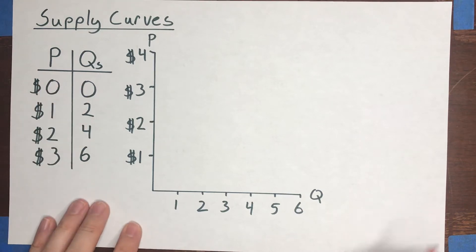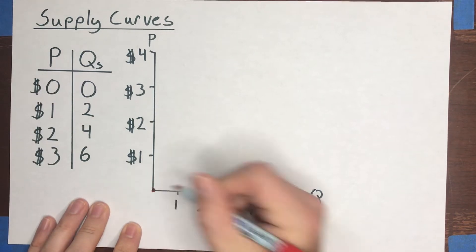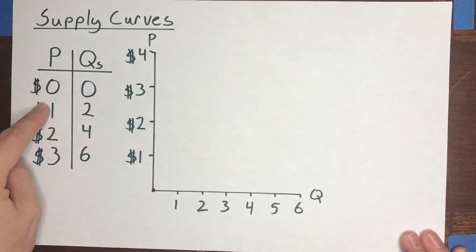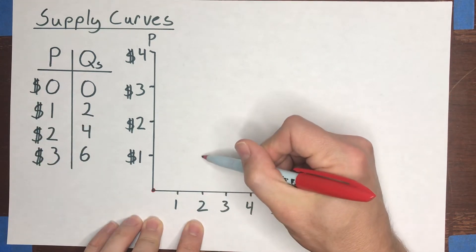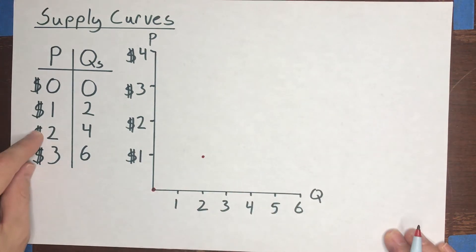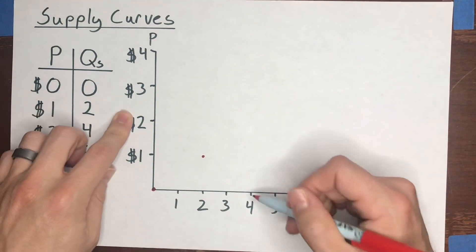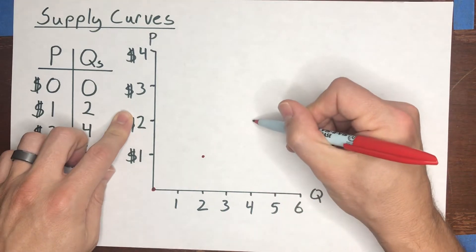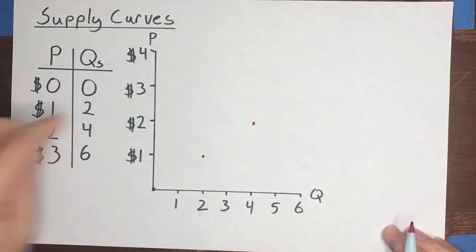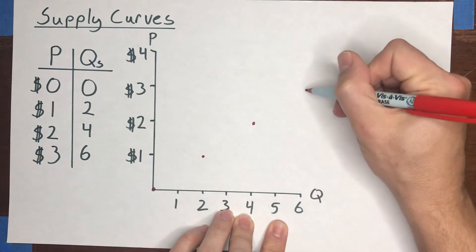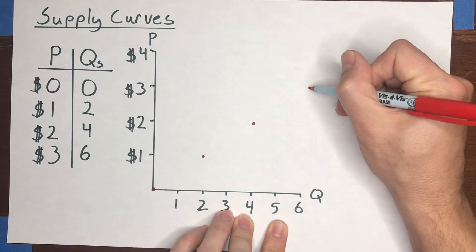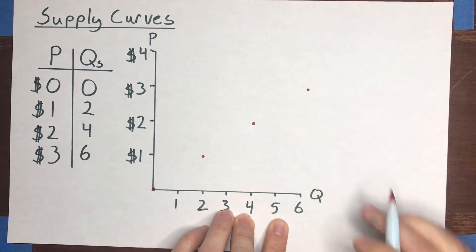So zero dollars gets you zero units supplied. That point goes right there. The price of one dollar would get two units supplied. So two units, one dollar right there. Two dollars will result in four units supplied. So that point is just about here. Three dollars at that price, six units would be supplied. And that puts us just about here.